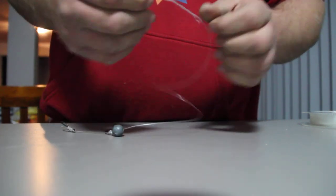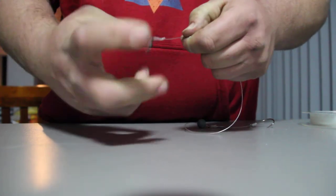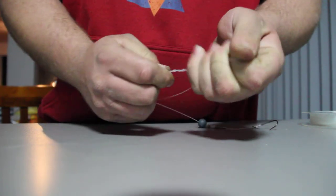Always remember to moisten your knots or wet your knots with a bit of spit for lubrication, and then pull tight slowly. Remember to pull on the tag and on the swivel for a nice clean knot.